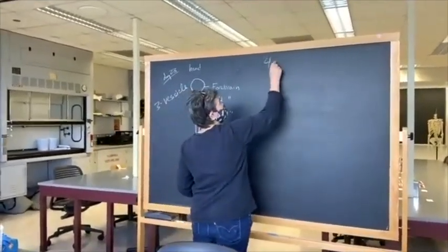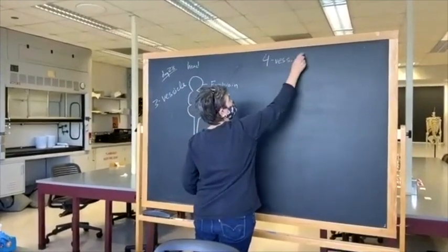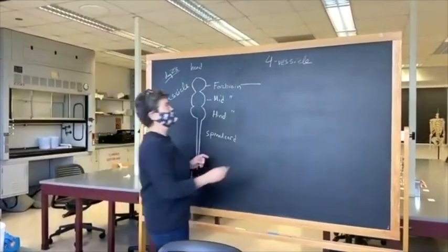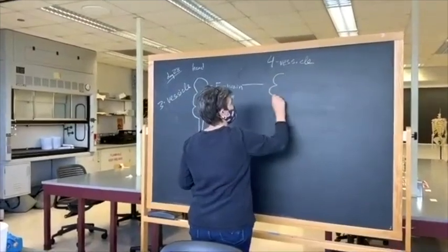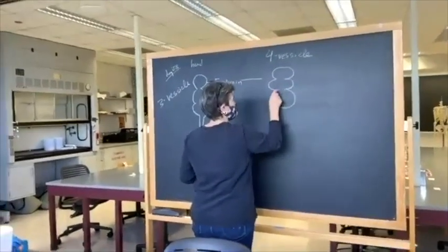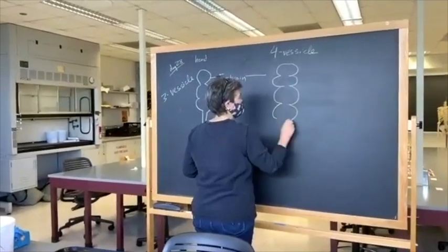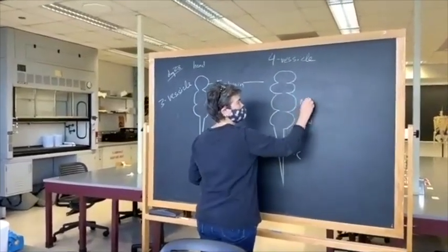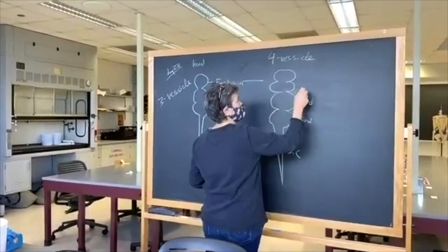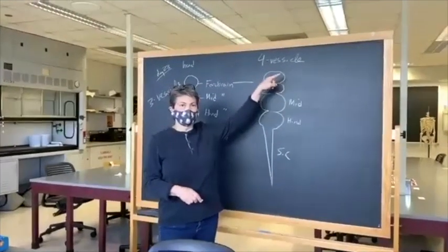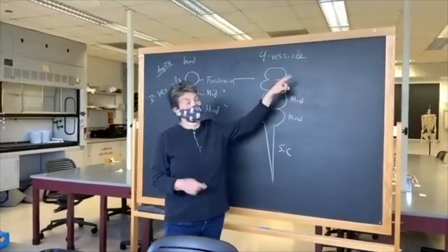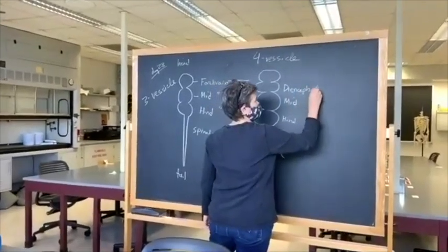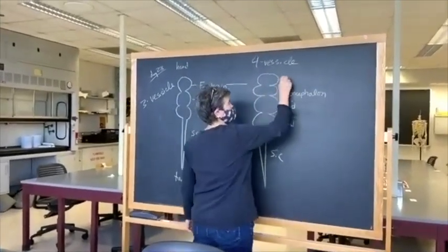Then we go to something called the four-vesicle stage. That is when the forebrain actually divides. We still have the spinal cord, hindbrain, and midbrain. Now the forebrain is split into two parts that don't have English names — they only have Latin names. This is called the diencephalon, and this is called the telencephalon.